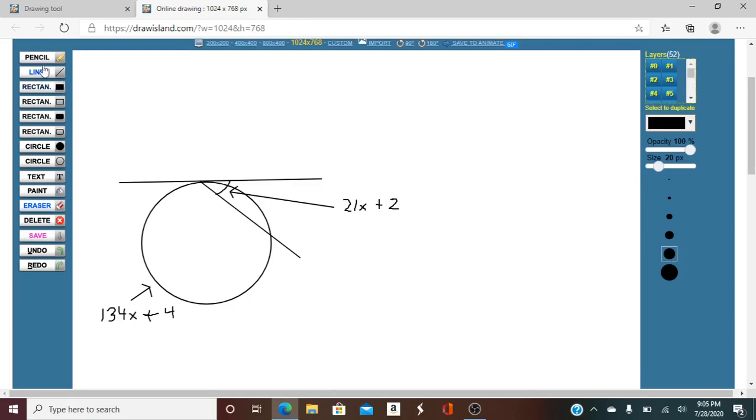So what I'm going to start to do is I'm actually going to draw a line here, another tangent line that hits the secant here. So these two angles are both 21X plus 2.